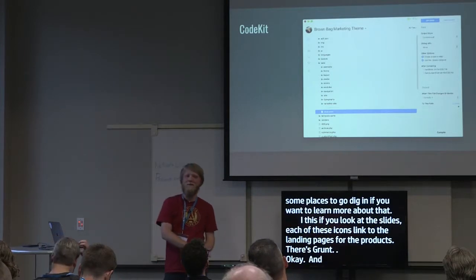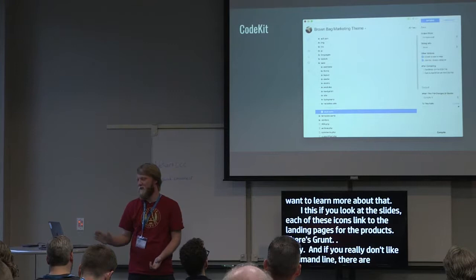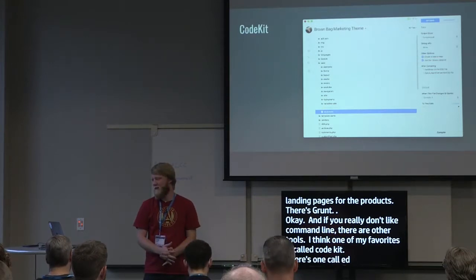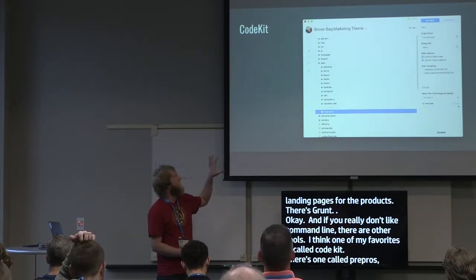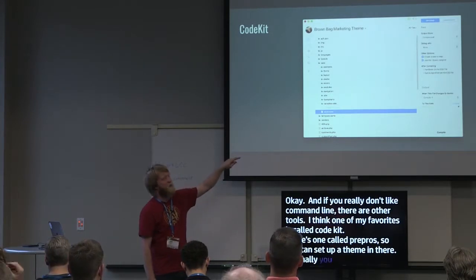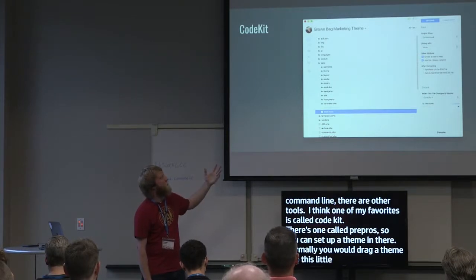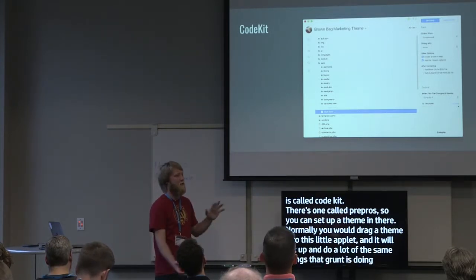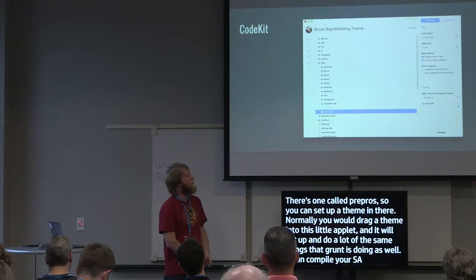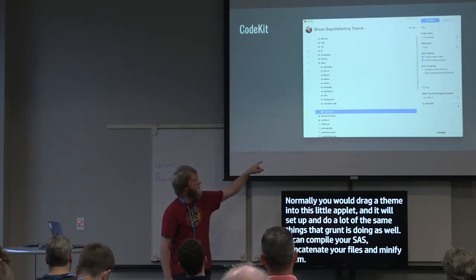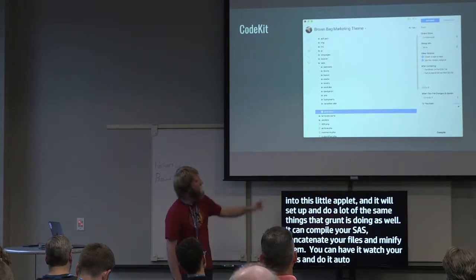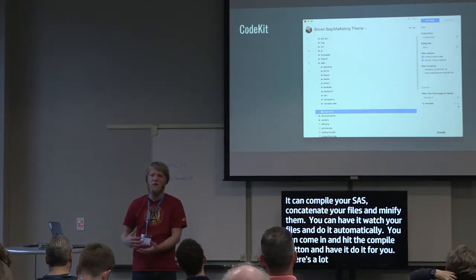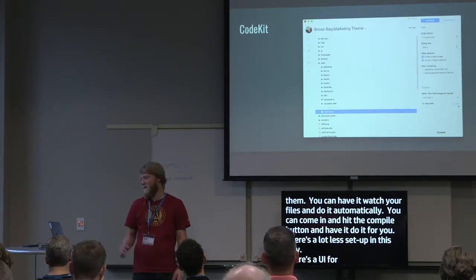If command line scares you, there are other tools. My favorite is CodeKit, and there's one called PrePros which is cross-OS. You can drag a theme into the app and set it up. It can do a lot of the same things as Grunt and Gulp — compile Sass, concatenate and minify files. You can have it watch your files automatically, or just click the compile button. There's a lot less setup and there's a UI for people who don't want to memorize command line commands.